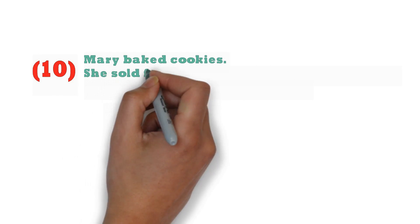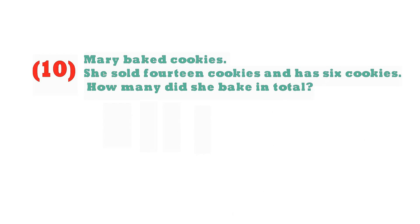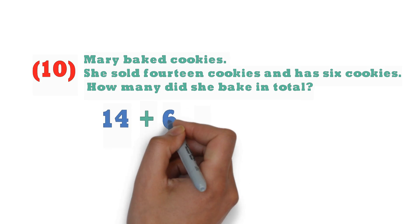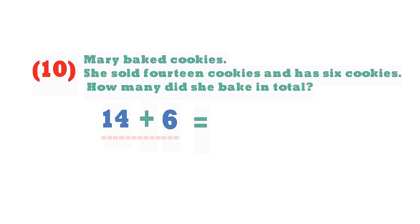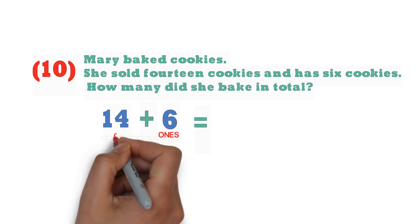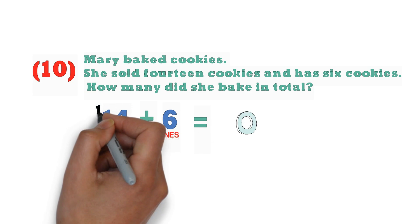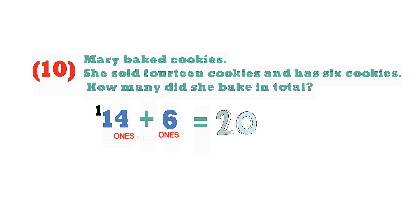Mary baked cookies. She sold 14 cookies and has 6 cookies left. How many did she bake in total? Mary sold 14 and she has 6 cookies left over, so the total of these 2 is the amount she baked. When you add 6 ones and 4 ones, we have 10 ones. The 10 ones regroup into 1 ten, and over here we've got 2 tens — so she baked 20 cookies in total.